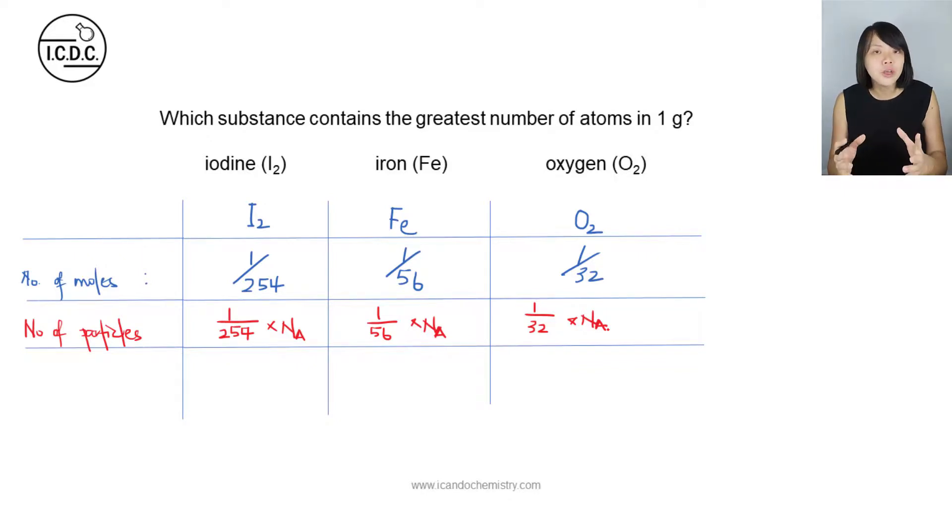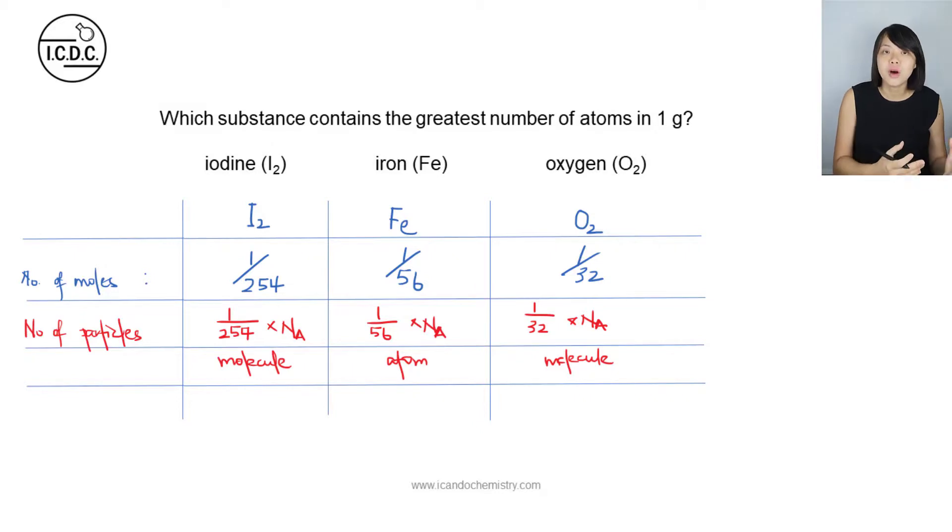Now at this point, are we able to very accurately determine the number of atoms in the same mass of these options? Now don't be tricked by this question. The keyword in this question is actually number of atoms. Now these different substances, some of them exist as atoms, some of them exist as molecules. So for those that exist as atoms, it is pretty straightforward. The number of atoms will be what we have worked out, which we represent in red.